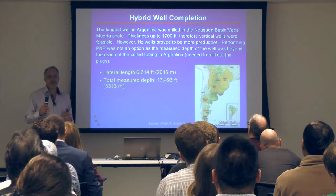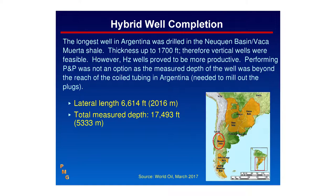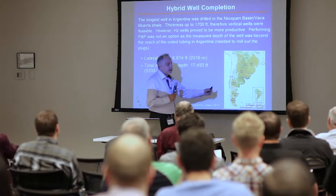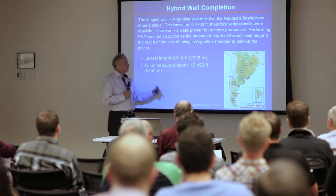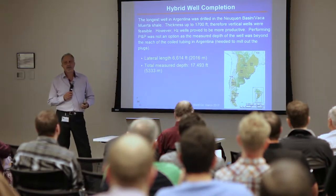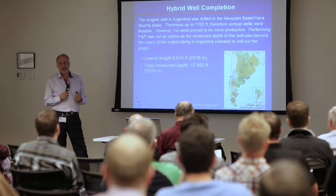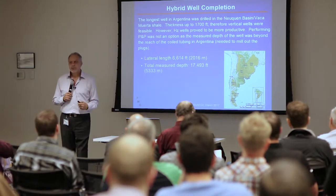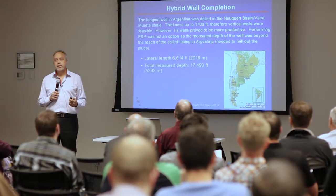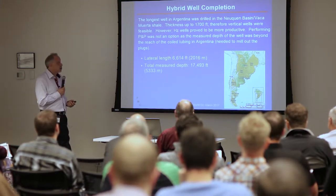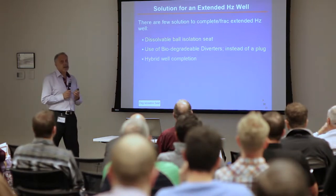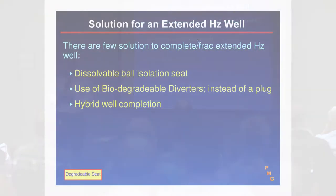That's why we came up with the hybrid completion — combining open hole close to the toe and cased hole close to the heel. This case study was published recently from Argentina. That well had a lateral of about two thousand meters and about the same in TVD. If you don't have coil tubing that can push tools to mill out plugs or run perforating guns at two thousand meters, you need a solution, and the hybrid completion provides that.